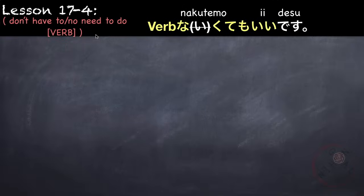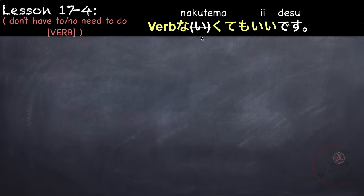Next is how to say 'don't have to' or 'no need to do verb.' We use the nai form of the verb again, remove the i, and add nakute mo ii desu. Verb nakute mo ii desu. This literally means 'even if you don't — it's okay.'